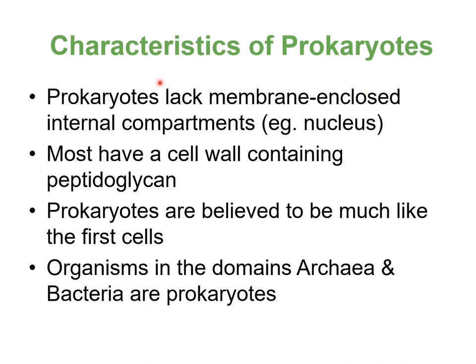Getting into the characteristics of prokaryotes — these are our simple organisms, and for the most part when we talk about them, we're talking about bacteria. These are the ones that lack membrane-enclosed internal compartments like a nucleus or mitochondria. But they do have those four things: DNA, cell membrane, cytoplasm, and ribosomes. Note that a cell membrane is different from a cell wall — all prokaryotes have a cell wall, and most have one containing peptidoglycan.